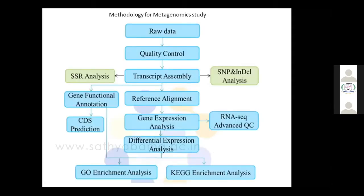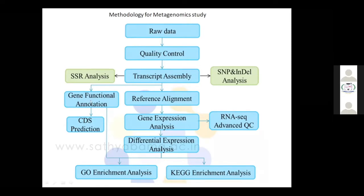After sequencing, for both the metagenomics and transcriptome studies, we obtain raw data. After quality control, the transcript assembly is performed — assembling of transcripts and mRNA transcripts. We then go for SSR analysis, single nucleotide polymorphism analysis, and integration analysis. After this, we go for gene function annotation — what genes are functional or non-functional, which are downregulated, CDS prediction, and codon sequencing predictions. Reference alignment, gene expression analysis (RNA-seq), and advanced quality control all need to be done for gene expression analysis.